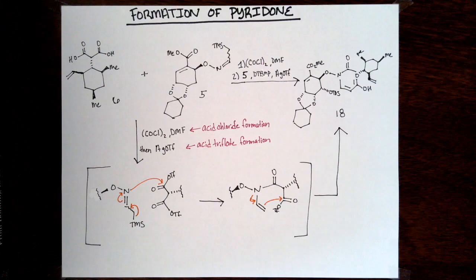The oxime ether then acts as a nucleophile to that acyl triflate electrophile. The nitrogen of the oxime ether attacks at the carbonyl carbon. This gives an enamine intermediate, which then collapses down as a nucleophile and attacks the remaining acyl triflate electrophile to form the pyridone ring. This reaction ends up working out beautifully. But as many reactions, this is the culmination of a lot of investigation.